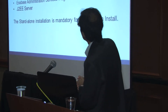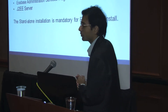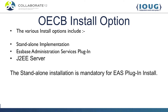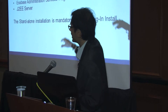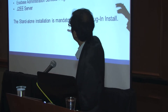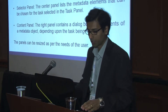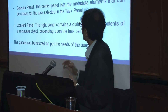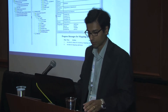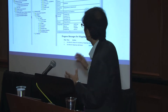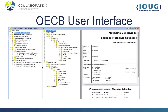There are three install options: you can install it in standalone mode, as an Essbase Administration Services plugin, or as a J2EE server. If you are installing it as an Essbase Administration Services plugin, you will first have to install the standalone implementation. The next step would be the Essbase Administration Services plugin installation. There is a file called OECB_AMI which you can execute — that is the main Oracle Essbase Cube Builder entry point.